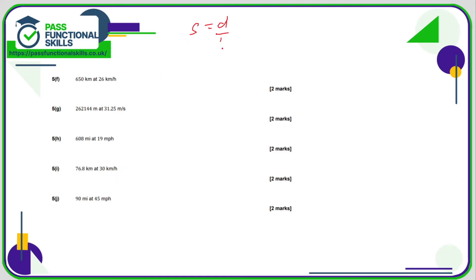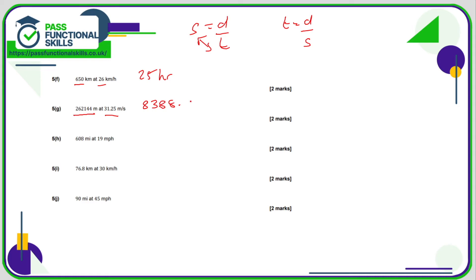Speed is distance divided by time, and we can flip these around: time is distance divided by speed. So for F: 650 kilometres divided by a speed of 26 is 25. Since the distance is kilometres and the speed is kilometres per hour, the time is going to be 25 hours. For G: 262,144 divided by 31.26 comes to approximately 8,608, and here the time is in seconds.